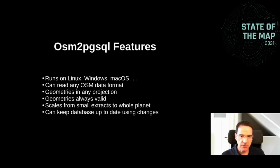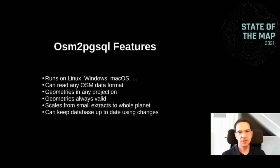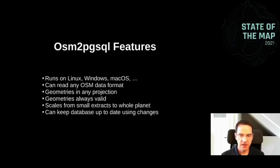The program runs on Linux, Windows, and macOS and can read any OSM data format. Geometries can be in any projection — typically the Mercator projection for tiles, but you can use any other projection also. It makes sure geometries are always valid, which is very important for working with the geometries. It scales from small extracts of your city to the whole planet, even on reasonably small machines. And you can keep a database up to date using the changes from OSM so that you don't have to re-import again and again.